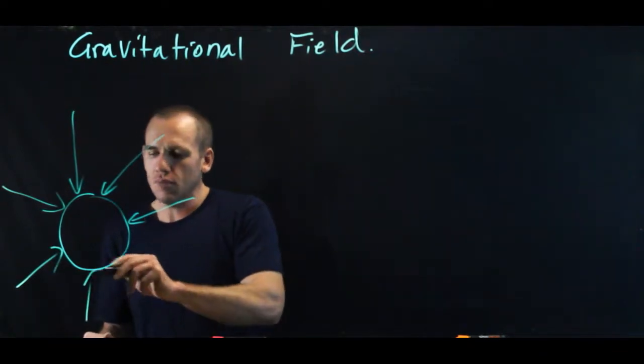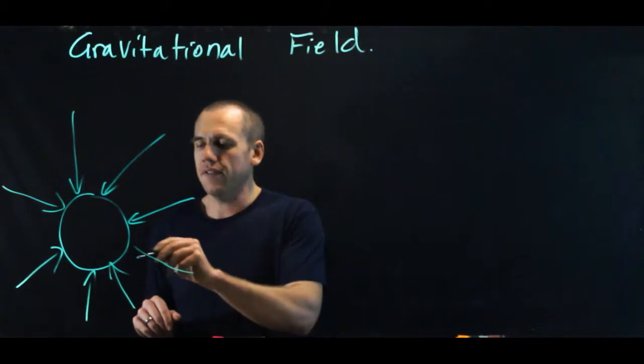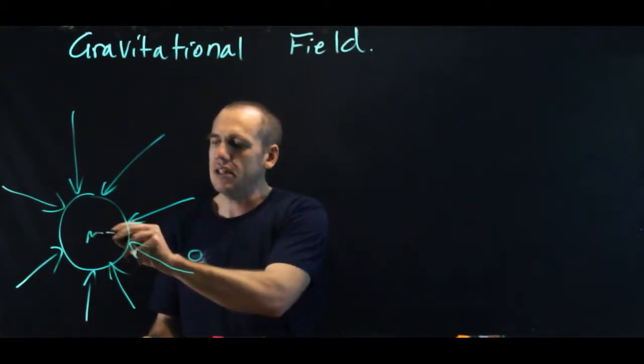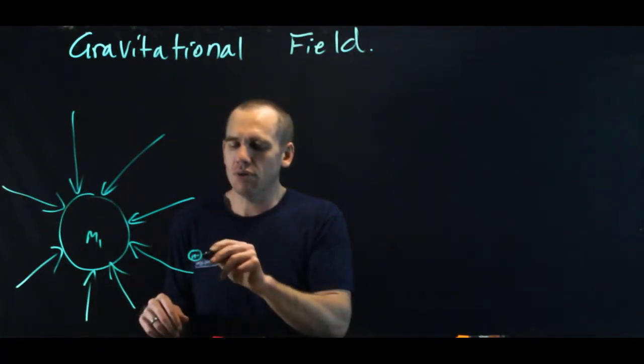So instead of the two masses interacting with each other, a mass actually interacts with the field. So if I put a second mass out here, so this is m1, and it could be the earth, it could be the sun, it could be any mass, and this is m2.